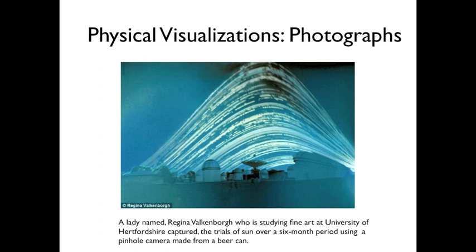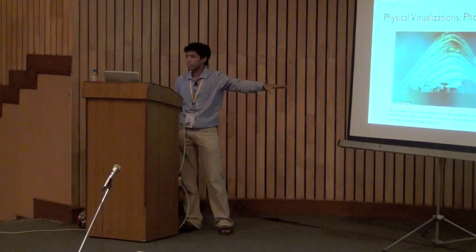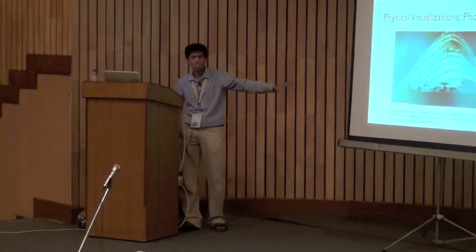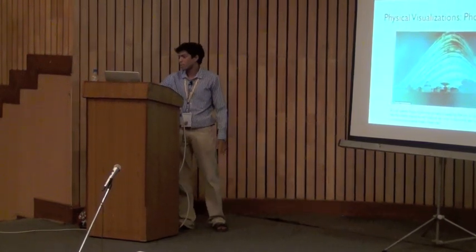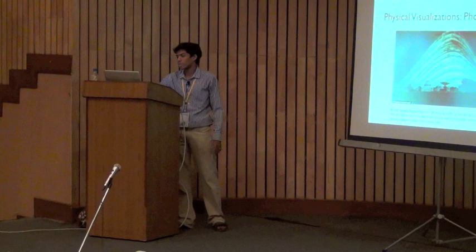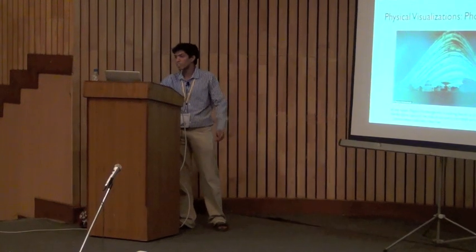The lowest streak is around June 21st — the summer solstice — and the topmost is the winter solstice at December 21st. This visualization shows six months of data, and the intermittent breaks in each streak represent moments when the sun was obscured by clouds. This is one interesting out-of-the-box visualization for people in the digital age.